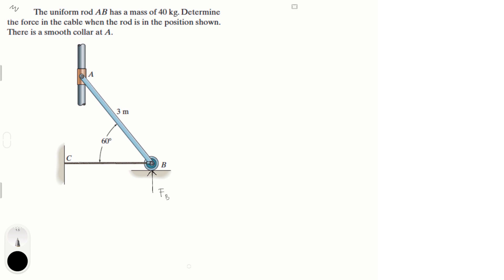Now they told us that this is smooth. Smooth means that there is no reaction going up and down because it would just slide. So there is only a vertical reaction at A. Let's call it F of A.